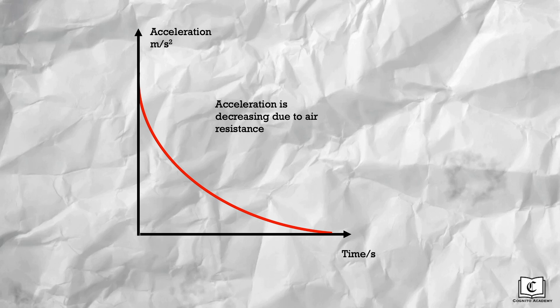Now, let's draw the acceleration time graph of this falling feather in air. Initially, when the feather is released, velocity is zero, hence no air resistance acts on the feather. Acceleration is maximum at 9.81 meters per second squared.